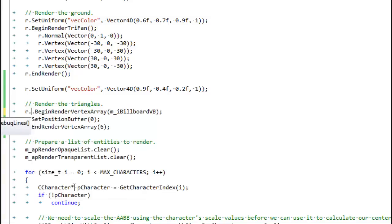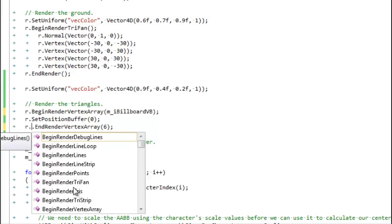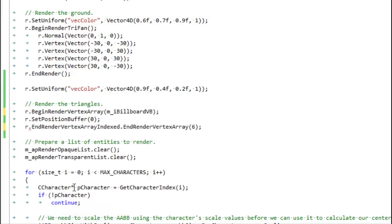But we're going to draw it a little bit differently than we did before. We have to use indexed render. We're going to pass it the index buffer that we created, and it's going to use this index buffer to determine which vertices to use in which triangles. And of course we want to draw - there are six vertices in this index buffer.